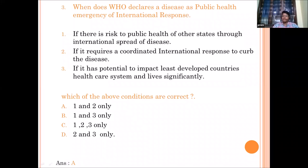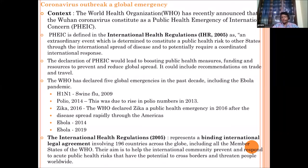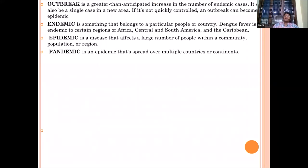Now for some technical terms important from the prelims perspective. The stages of a disease are: first an outbreak happens, then it may convert into an endemic, then form into an epidemic, and the final stage is a pandemic. Understanding these classifications is important for UPSC.